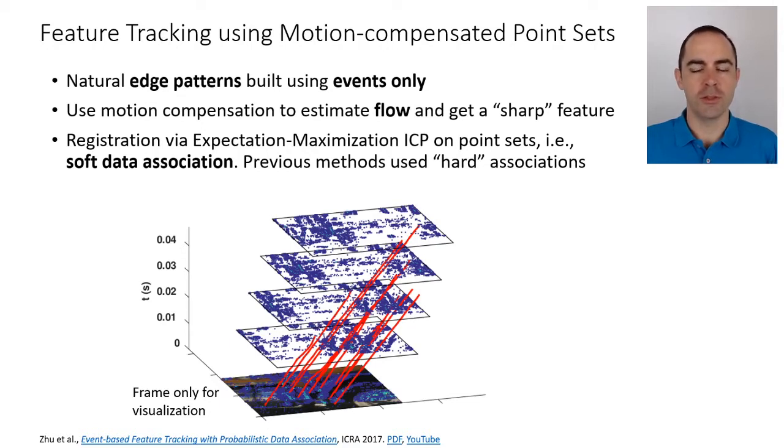The natural edge patterns will come directly from the events and motion compensation. It's a technique that we have commented already in the event representations. Here it's used for point sets rather than for images, and the goal is to line up events that are displaced, so that you get a sharp feature template that is easier to track or more reliable to track.